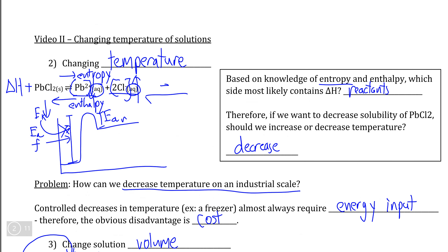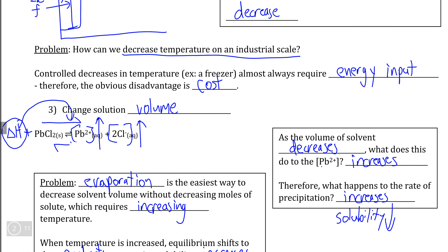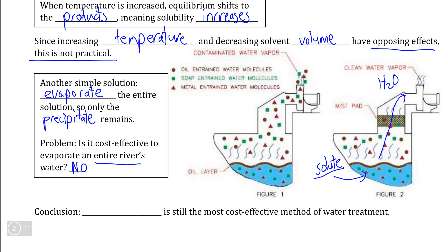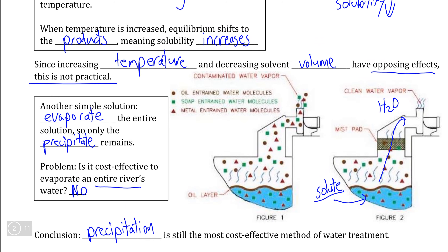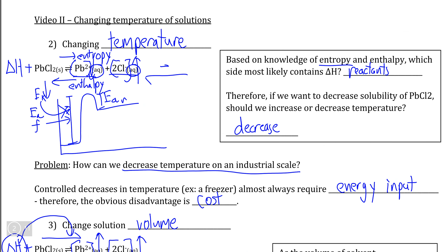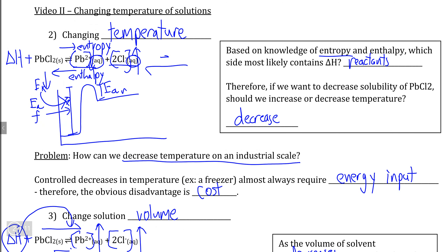Even though there are ways of shifting solubility equilibria to favor the precipitation reaction by modifying temperature and volume, from an engineering perspective these are not cost effective. Precipitation by using common ions is still the most cost effective way of water treatment, and therefore the most common method used. In the final video in this section, we're going to take a look at how to predict exactly when a precipitate forms based on the known concentrations of ions within a contaminated water source.